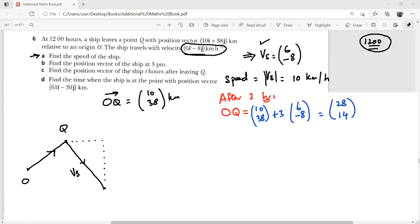Find the position vector of the ship three hours after leaving Q. For this purpose, let me write this as OQ_T, that will be (10, 38), that was where at 12 o'clock. And then T hours after that, that is going to be (6, -8). So this is 10 plus 6T, and this is 38 minus 8T. So by putting the value of T, if our ship is going in this direction with this velocity, we can always determine the position vector.